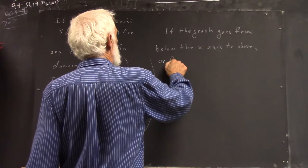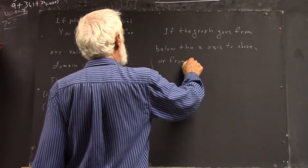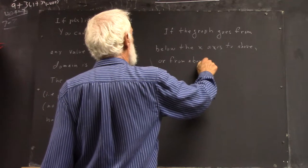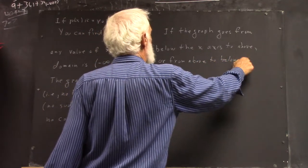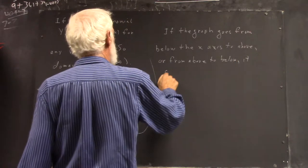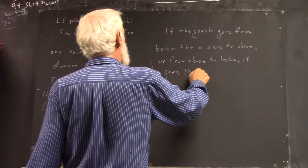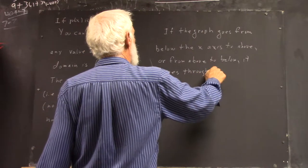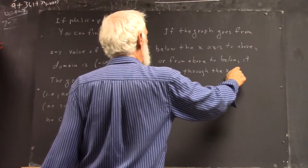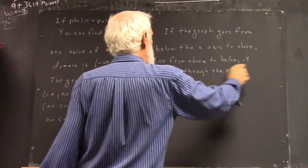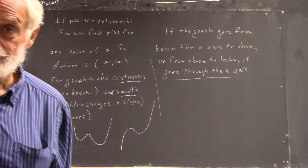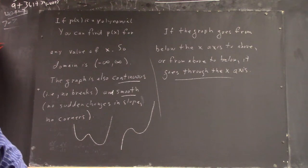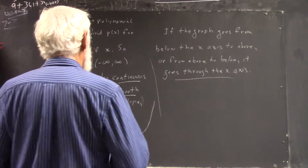The same thing if you go from above to below, it goes through the x-axis. This is called the Intermediate Value Theorem.